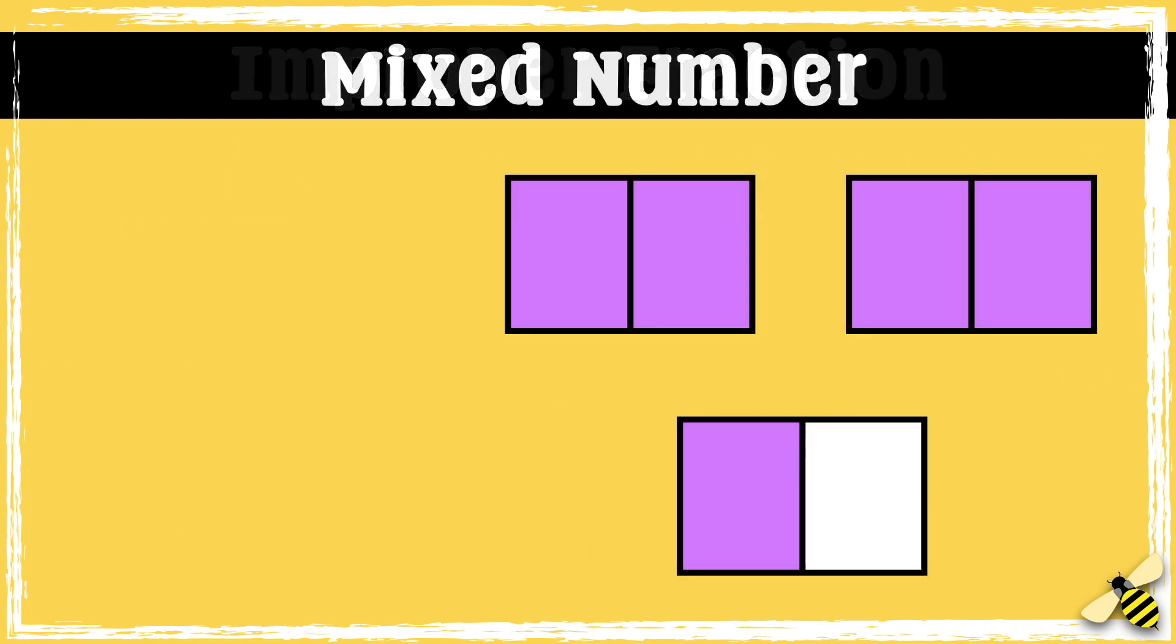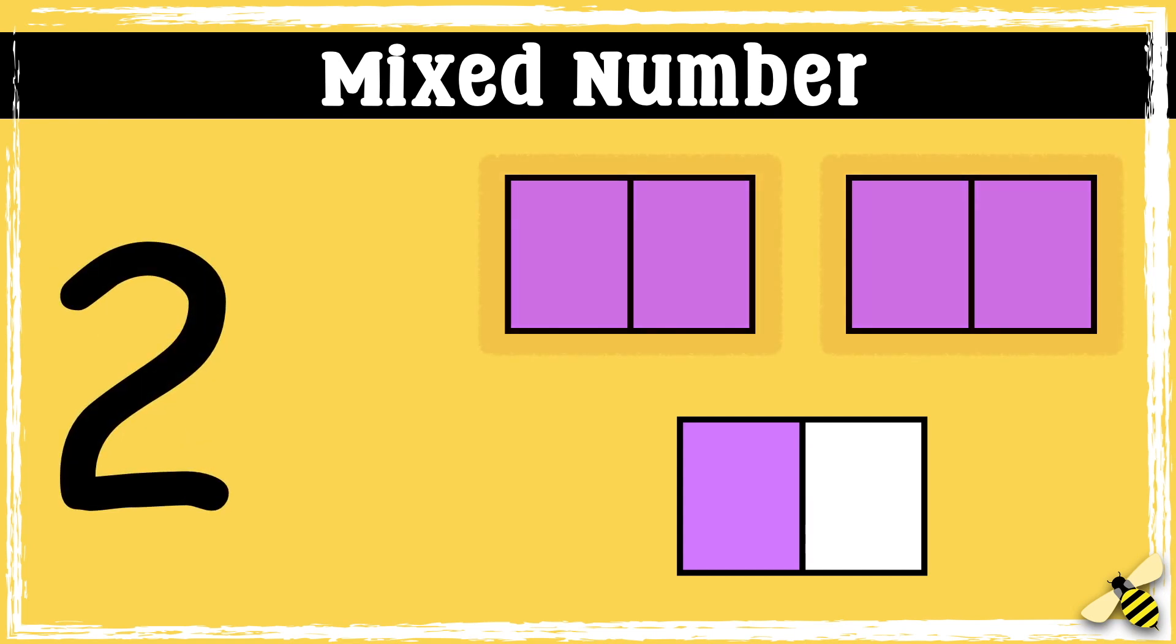So now let's look at it as a mixed number. So we have two wholes, and then we have one half left over. So we'd say two and a half.